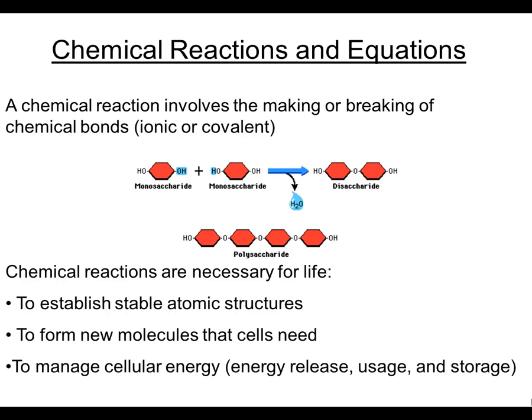We need to begin with understanding what a chemical reaction is and what a chemical equation is. First of all, chemical reactions involve making or breaking of bonds between different substances. The picture that you see on the screen represents the production of a bond between two monosaccharides, which are simple sugars. In the process of making that bond, there's a reaction called dehydration synthesis. You can see the water molecule that is being released, allowing for the bridge between these two molecules to form.